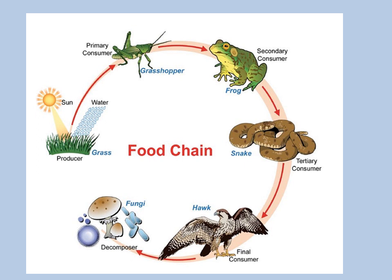Again in this food chain we can see that with the help of sunlight the grass is producing food and it is acting as a producer. This producer is acting as feed for the grasshopper which is the primary consumer. So, the grasshopper is the primary consumer of the grass.